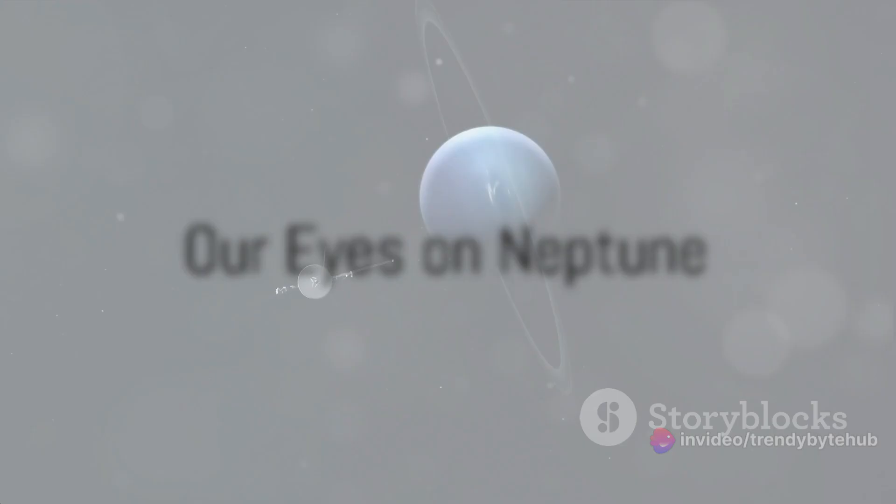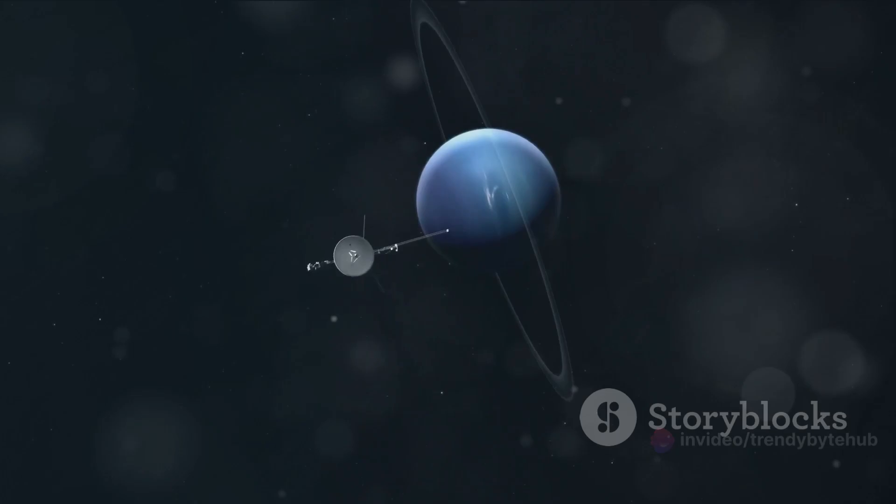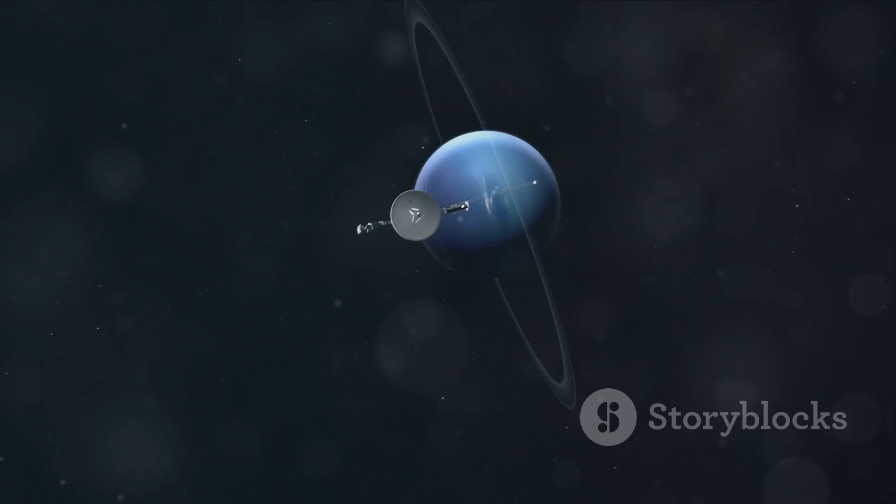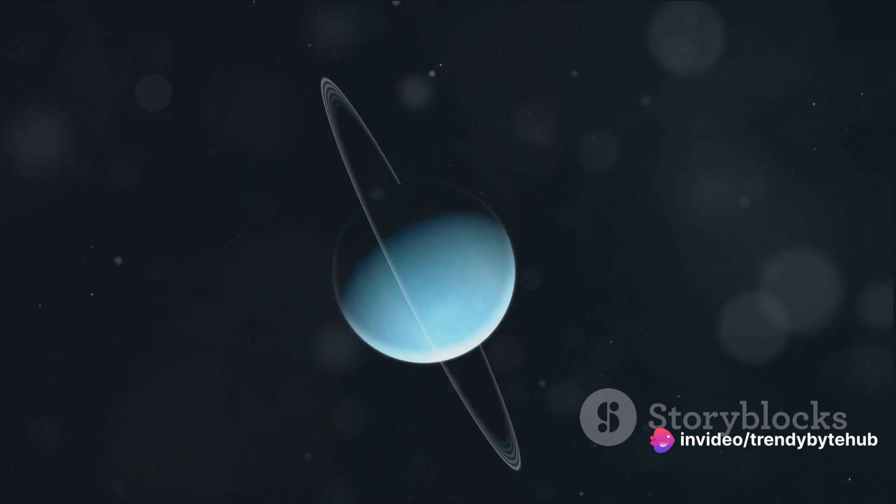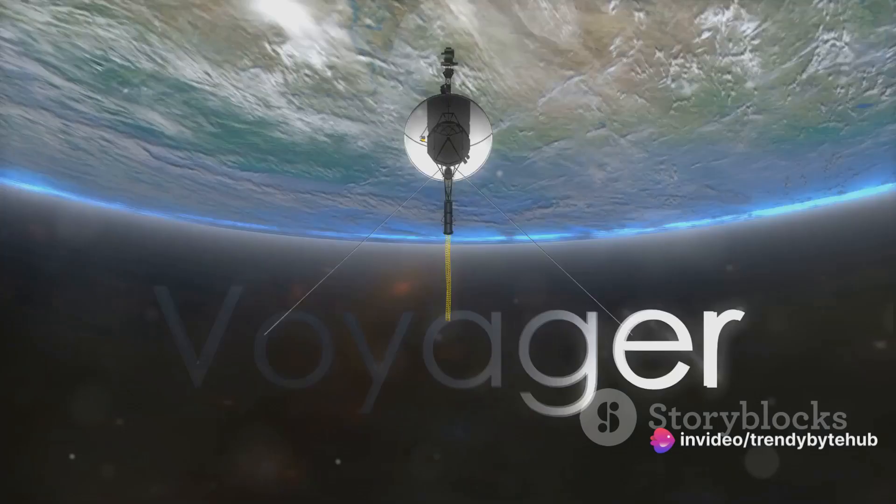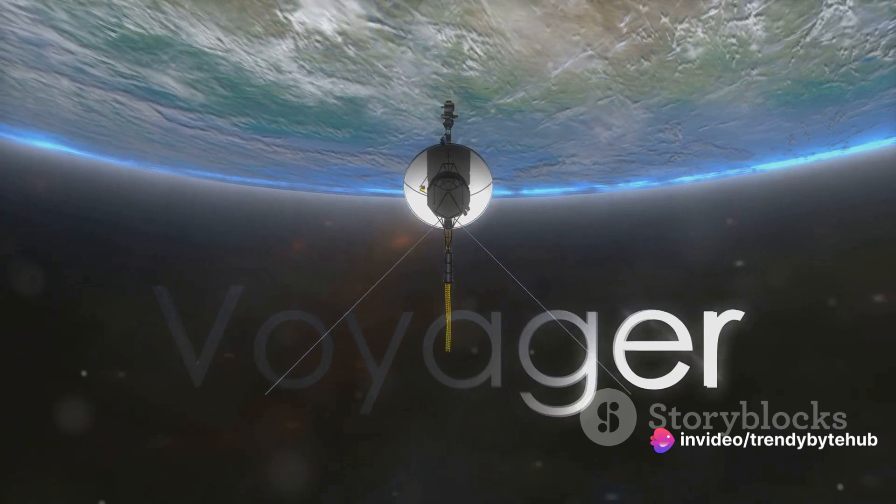The year 1989 marked a milestone in our understanding of Neptune. Let's journey back to that year, when our tiny spacecraft Voyager 2 embarked on a daring mission to the outermost edges of our solar system. Voyager 2 was not an ordinary spacecraft. It was the only one of its kind that has had the privilege to fly past Neptune, the enigmatic blue giant. The mission was filled with anticipation and uncertainty, as we ventured into the unknown, seeking to unravel Neptune's secrets.